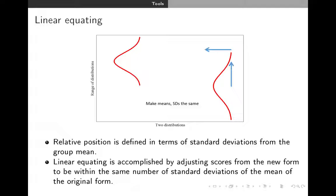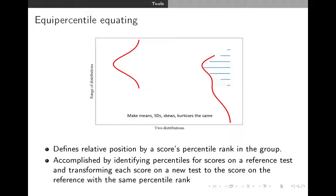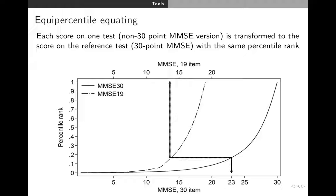This works best when you have a normally distributed variable. If your variable is highly skewed, a good approach is equi-percentile equating. Here, we look at individual percentile ranks for each test. We identify percentiles for scores on a reference test, and then find the corresponding score on the second test that has that same percentile — making the values for each percentile the same. Even if you've got a weird bimodal distribution, you can make it look like the distribution in your reference sample. For example, we used equi-percentile equating with the MMSE. We had data from a 19-point MMSE and showed that a score of 23 on the 30-point MMSE was at about the 14th percentile in our sample, and the 14th percentile on the 19-point MMSE is a 14. So a 14 out of 19 appears comparable to a 23 out of 30. An important limitation is that equating will depend on the distributions in your particular sample.